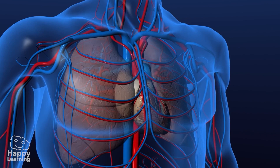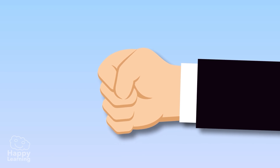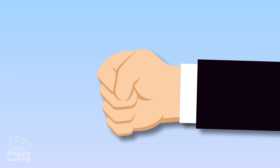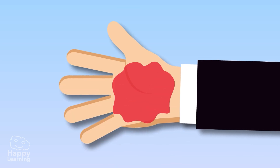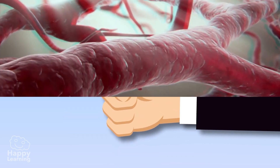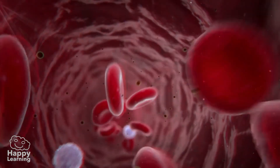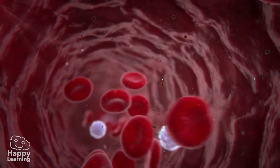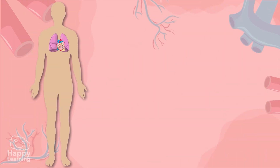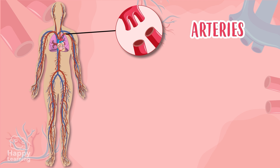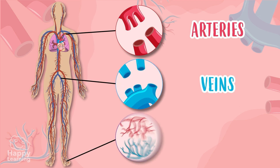To understand how our heart beats, imagine that your hand is a heart — when it opens up, it fills with blood, and when it closes, it pumps that blood outwards. When blood exits our heart, it flows through the whole body through blood vessels, and there are three types: arteries, veins, and capillary vessels.